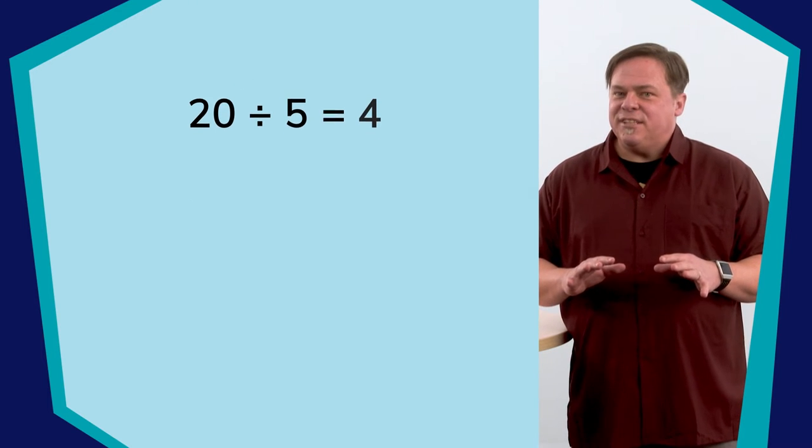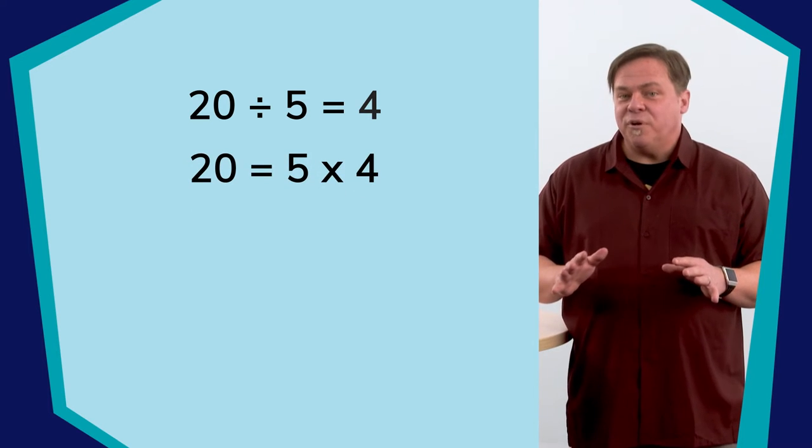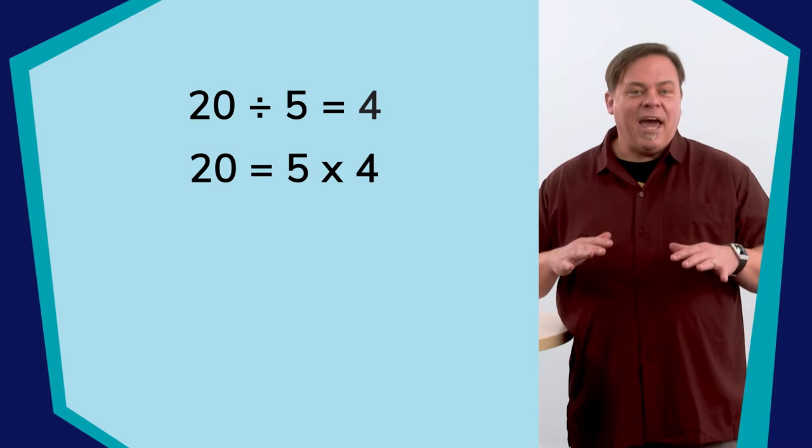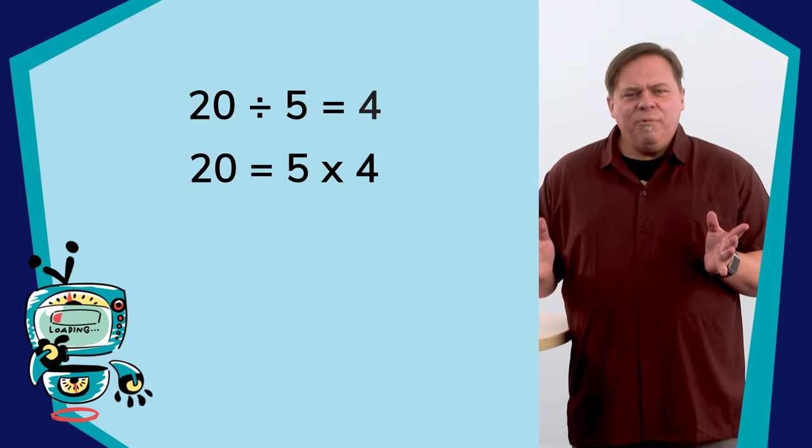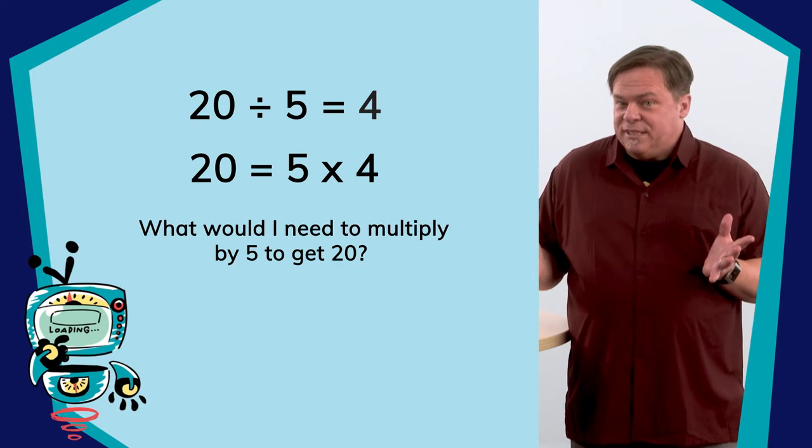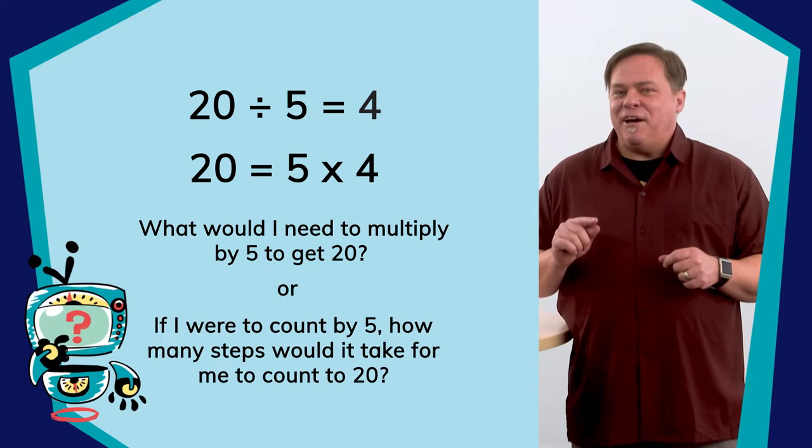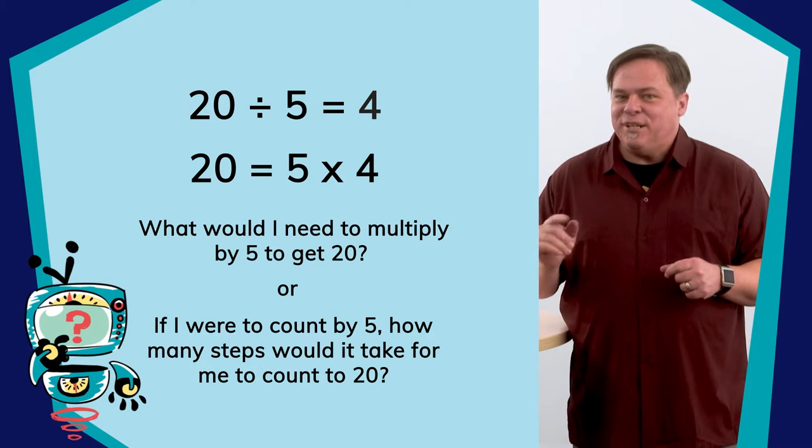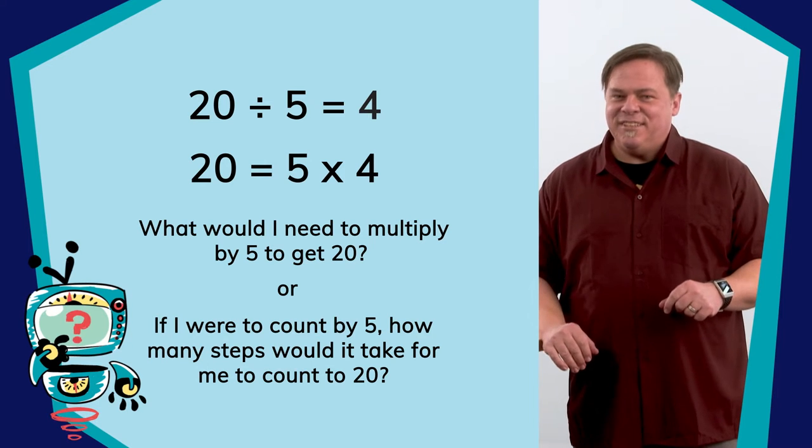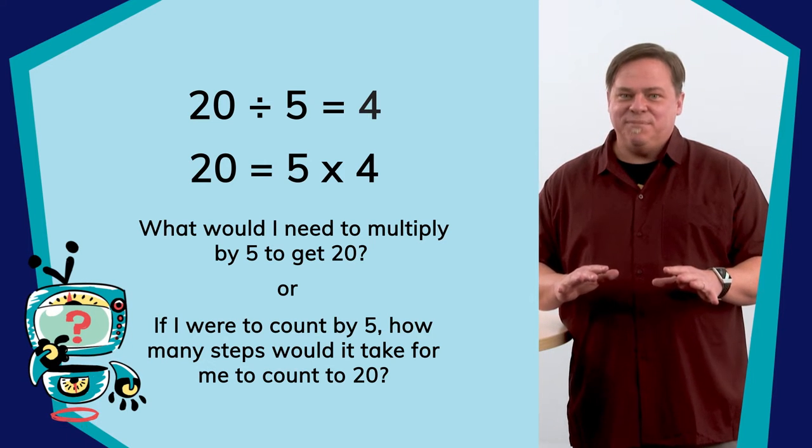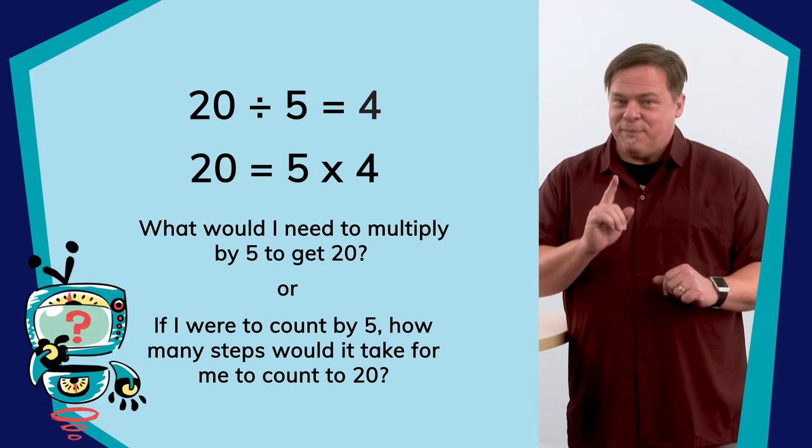You can also think about this in terms of multiplication. Twenty equals five times four. If you have a problem, twenty divided by five, you can ask yourself, what would I need to multiply by five to get twenty? Or you could ask yourself, if I were to count by fives, how many steps would it take for me to count to twenty? One of the cool things about division is that there are a lot of ways to think about it. And one thing you'll want to do is figure out which way of thinking works best for you.